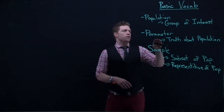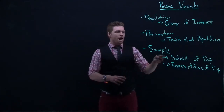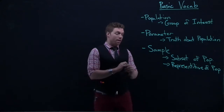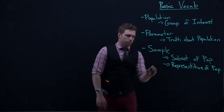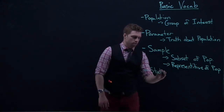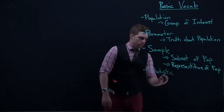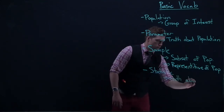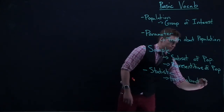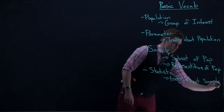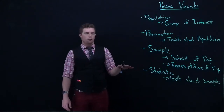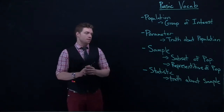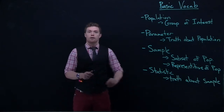Just like how a parameter is some truth about the population, after we gather our sample and measure their eye dilation, the result we calculate from that sample is called a statistic. We can say a statistic is some truth about the sample.